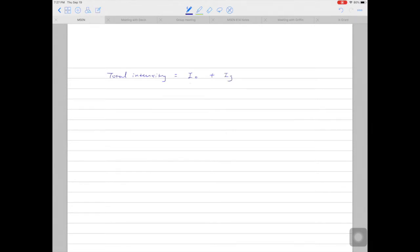So these are the two beams. I0 is the intensity from the direct beam or transmitted beam, and IG is the diffracted beam, or the intensity of the diffracted beam.